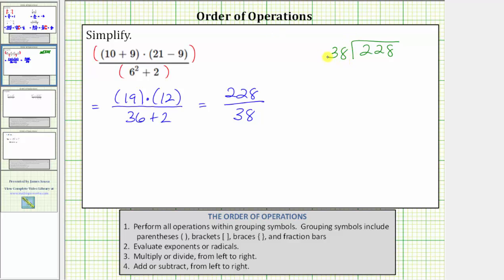I believe there are six 38s in 228. Let's check this. 6 times 8 is 48, form an exchange. 6 times 3 is 18 plus 4, which is equal to 22. Notice 6 times 38 is exactly 228. The remainder is zero, which means the expression simplifies to 6.